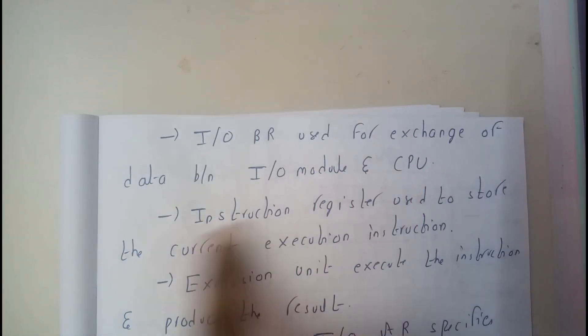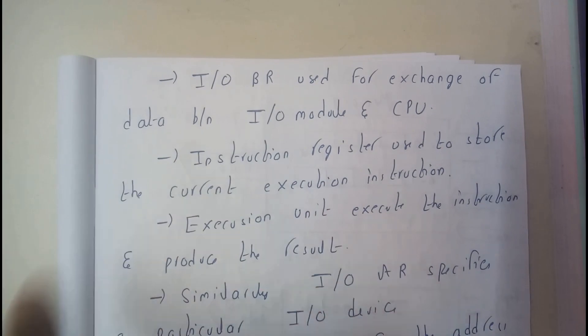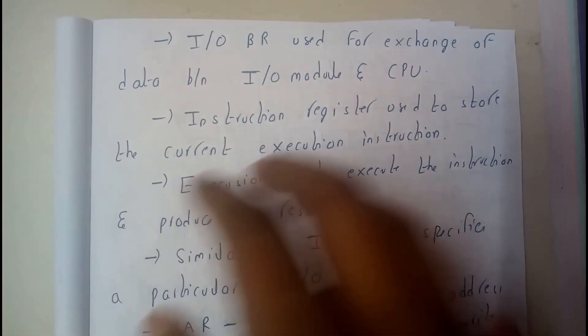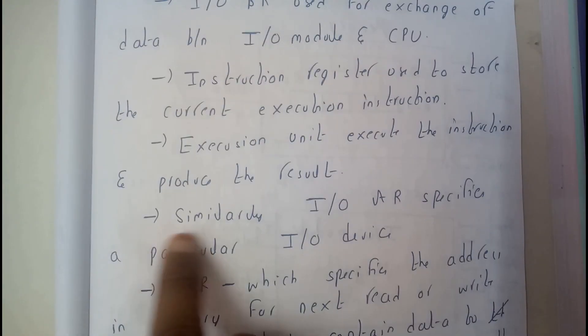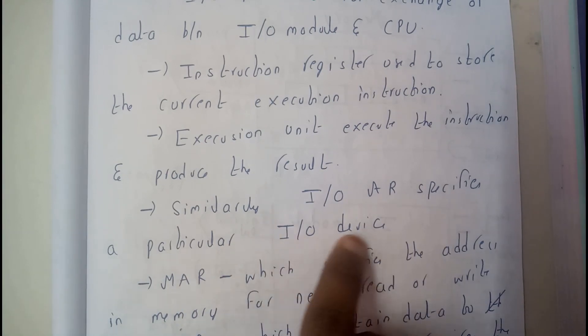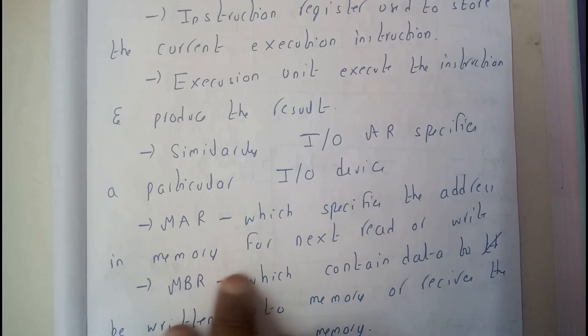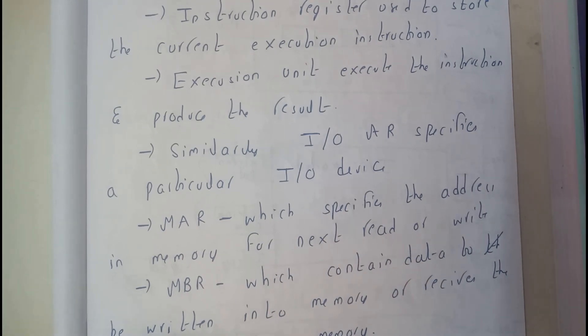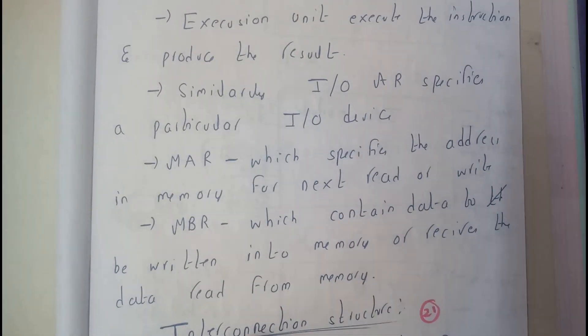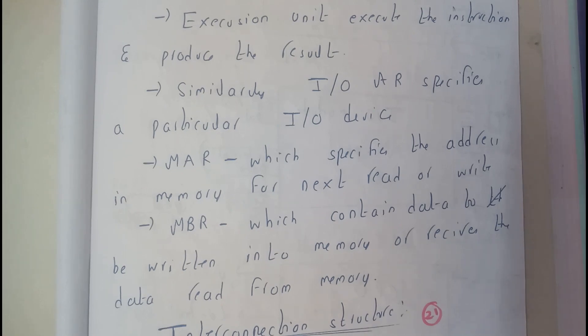Instruction register is used to store the current execution instruction. So now there is an operation going on, like addition. So addition will be stored in this instruction register. Execution unit is the thing that processes and generates the result. I/O AR represents a particular I/O device address. MAR specifies the address in memory for next read or write operation. MBR contains data to be written into the memory or receives the data read from memory. So now I hope everyone got a small idea on all the most important components of a computer.